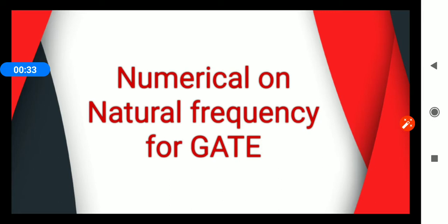Forced vibration is when we give a repetitive force; after each cycle completes, it moves in to and fro motion. Third, damped vibration — after every cycle completes, we provide resistance. For a damper, there is resistance, and if resistance is provided after every cycle, it will be damped vibration.